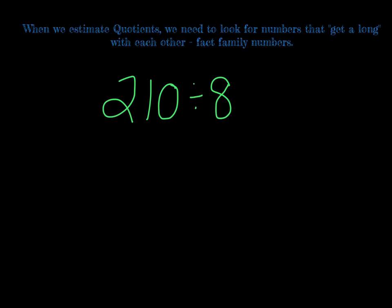Remember we were talking about numbers that get along, fact family numbers. We need to think about 8 and our first two digits here. 8 and 21 don't get along, there are those two bulls fighting over that piece of pizza again. We need to ask ourselves our fact family numbers: 8 times 1 is 8.